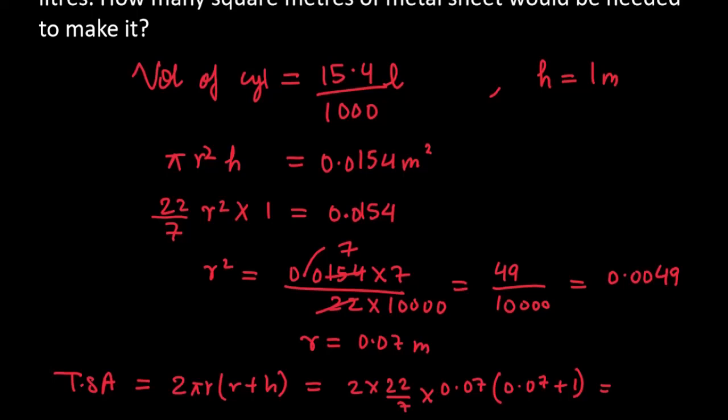So you will get 0.01. Multiply karenge in tino values ko. Toh aapke paas final answer kya ajaega? 0.4708 meter square.